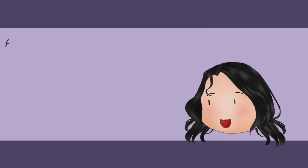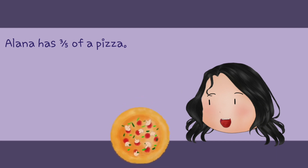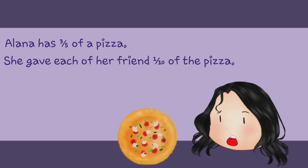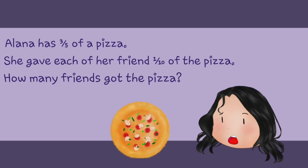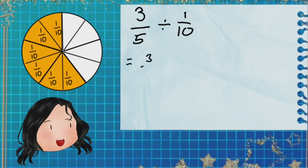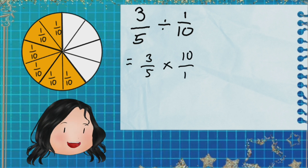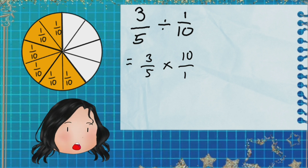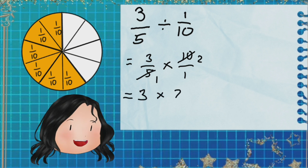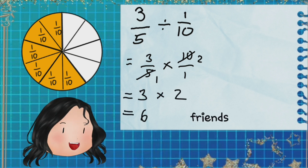Here's a word problem. Elena has 3 fifths of a pizza. She gave each of her friends 1 tenth of the pizza. How many friends got the pizza? So, 3 over 5 divided by 1 over 10 equals 3 over 5 times 10 over 1. 10 and 5 can be divided by 5, so 5 divided by 5 is 1 and 10 divided by 5 is 2. So 3 times 2 equals 6. 6 friends got the pizza.